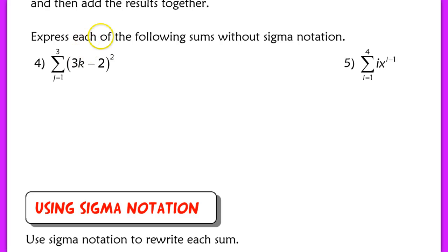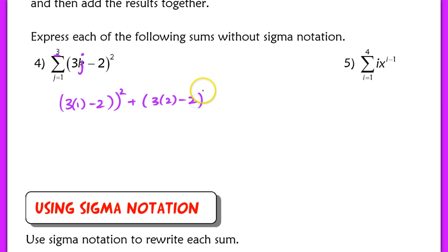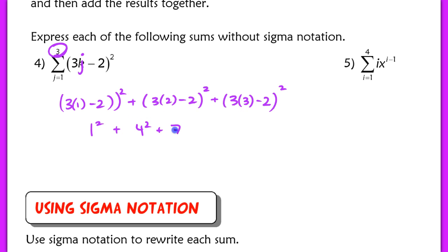Let's try a more complicated example. This notation says to take the first term up to the third term, evaluating the expression 3k minus 2, squared. So we get: (3 times 1 minus 2) squared plus (3 times 2 minus 2) squared plus (3 times 3 minus 2) squared, which is 1 squared plus 4 squared plus 7 squared, giving us 1 plus 16 plus 49, which equals 66.